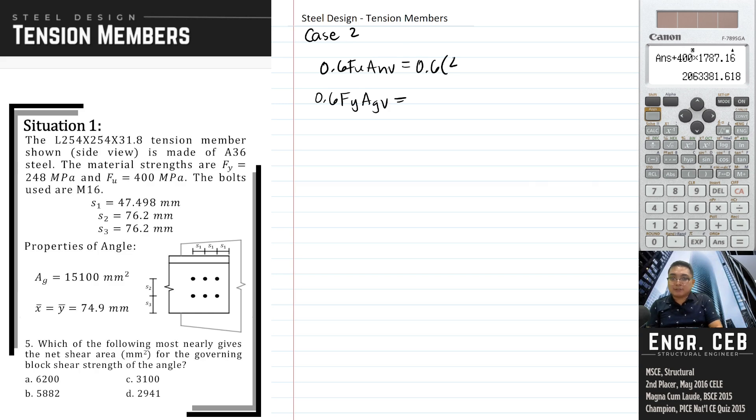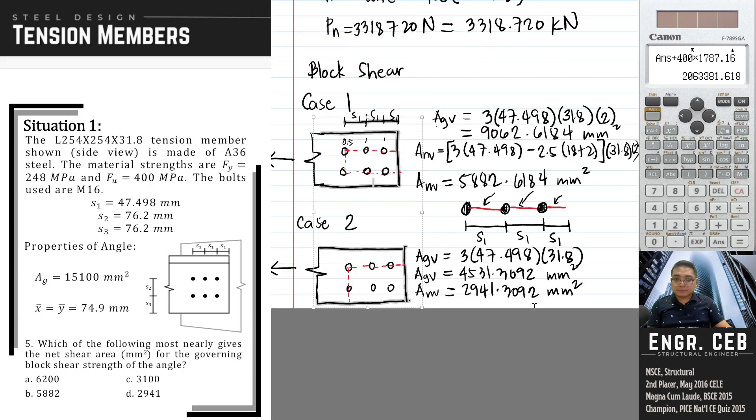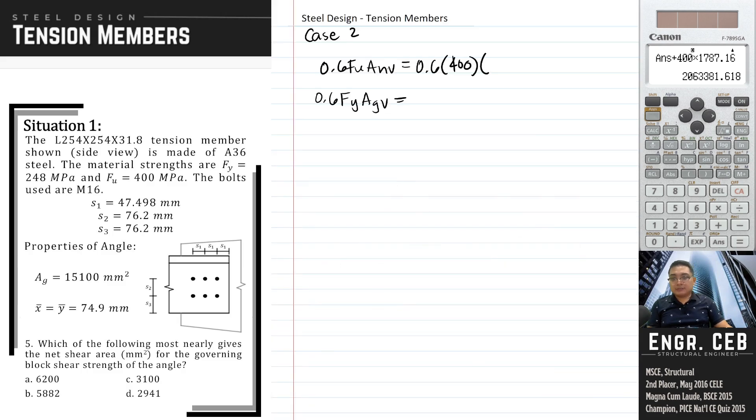For case 2, 0.6 FU, the ANV for case 2 is ANV is 2941.3092.